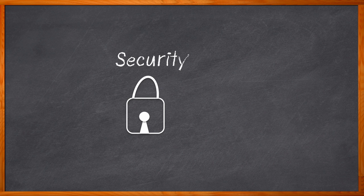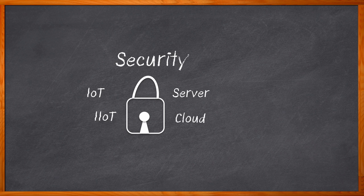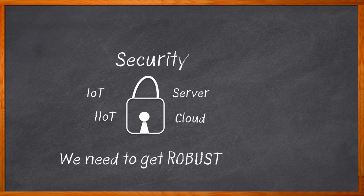Do you remember when security wasn't a big-time design concern? For today's IoT, server, and cloud computing applications, a proper security solution needs to be robust — including key protection, secured firmware updates, identity protection, and a whole lot more. But if you're looking to get your design off the ground quickly, how do you implement a robust security solution without slowing down your design process? Infineon's OPTIGA TPM — that's how.